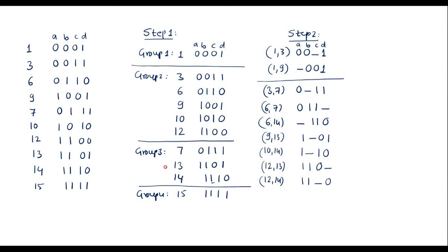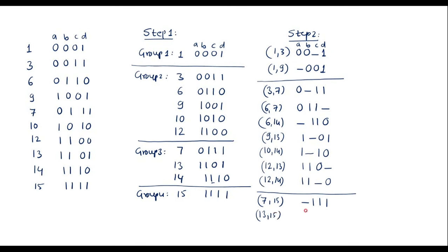Group 2 to Group 3 comparison is done. Now we compare Group 3 with Group 4. Comparing 7 and 15 — they differ by one bit, giving 7,15 as -111 (written as 0111 vs 1111, differ in MSB). Comparing 13 and 15 — differ by one bit, giving 13,15 as 11-1. Comparing 14 and 15 — they differ in the LSB, giving 14,15 as 111-.